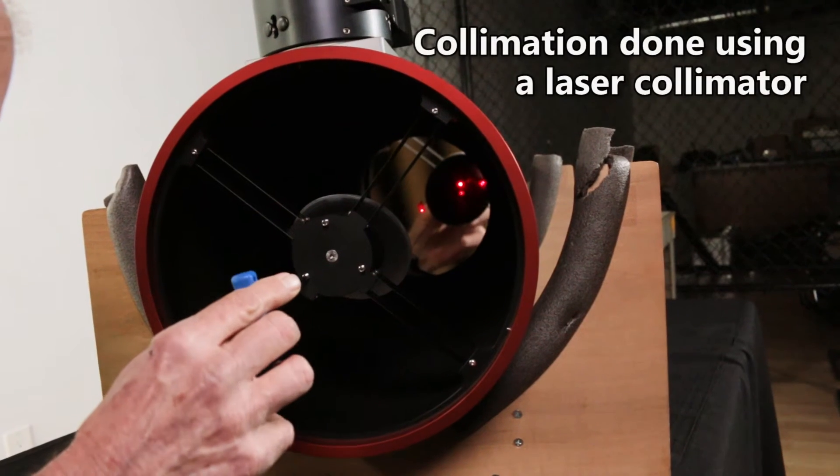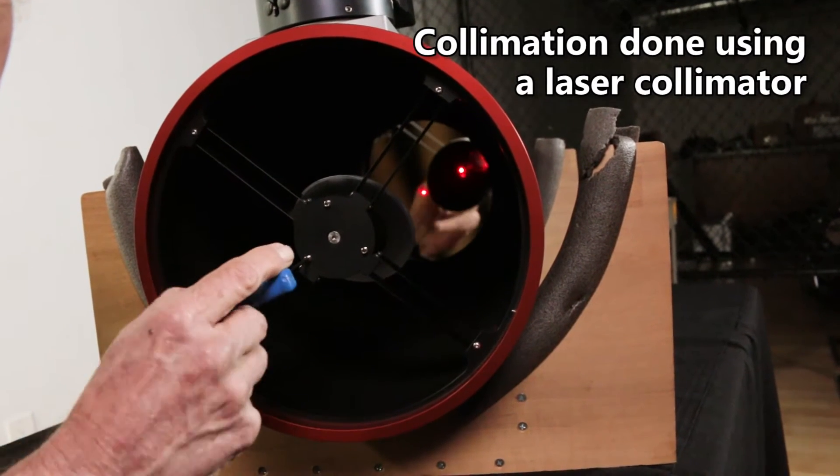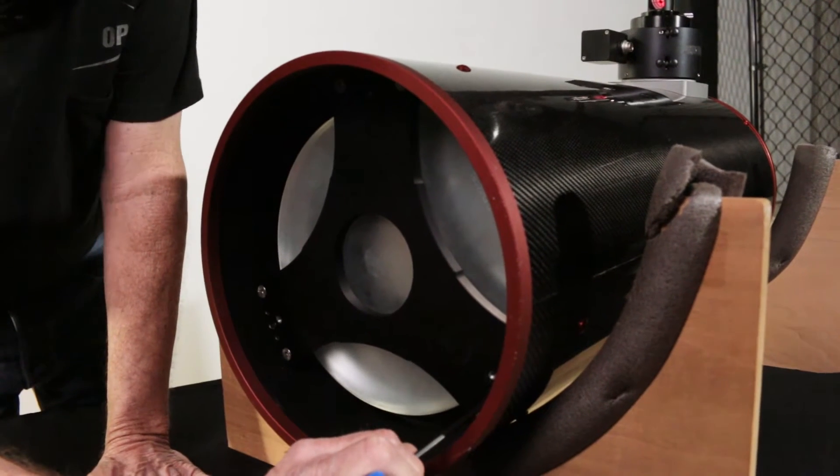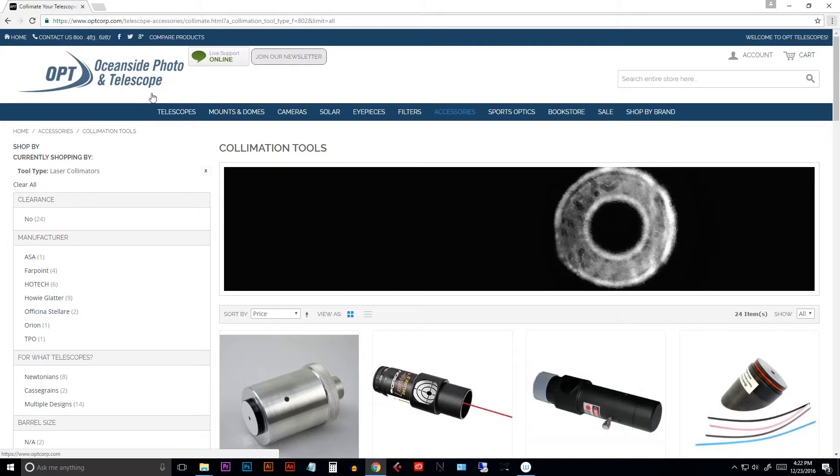What we're going to do today is put in a laser and we're going to actually align those two optical paths to give us the best collimation of the telescope to produce the best quality images. There are several different lasers to use.